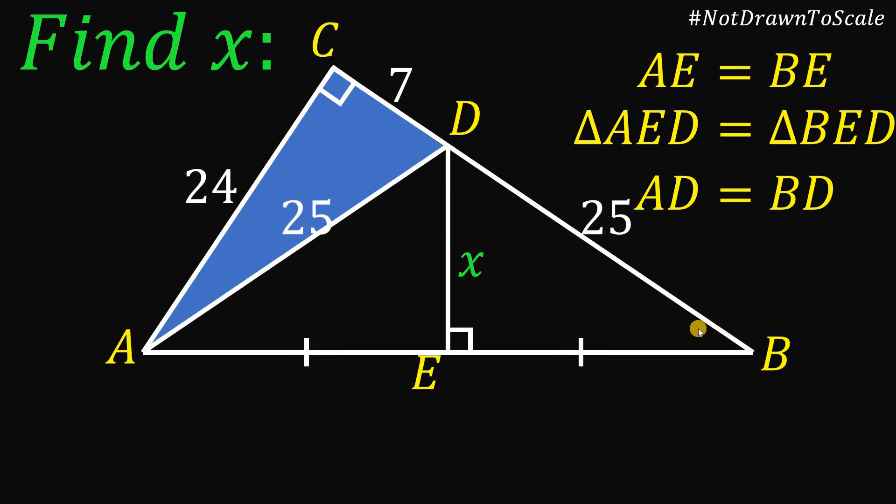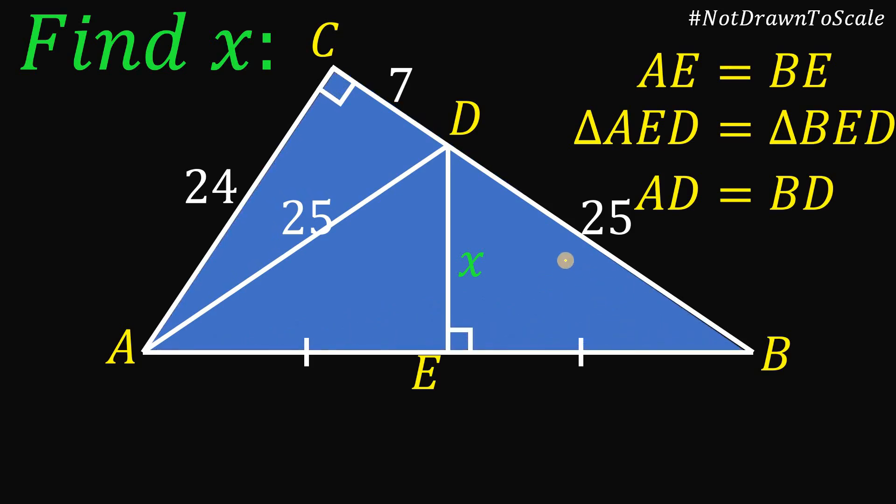Now, let's focus on this big right triangle. And again, using the Pythagorean theorem, using the side 24, 7 plus 25, and the hypotenuse AB, we get AB raised to the power of 2, or the hypotenuse squared, equals 24 squared plus 7 plus 25 is 32 squared. 24 squared, we all know that. We have 576, and 32 squared, we have 1024. And if we add these two numbers, we get 1,600.